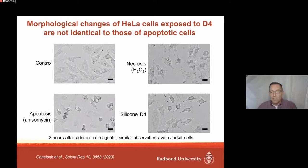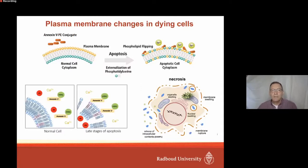We saw more or less the same effects in another human cell line, Jurkat cells, which is a T-lymphoblastic cell line. What happens at the plasma membrane in dying cells - particularly those dying through apoptosis or necrosis - is that during apoptosis, phospholipids in the bilayer of the plasma membrane, which are generally only found on the inner side, flip to the outer side of the plasma membrane, particularly phosphatidylserine.